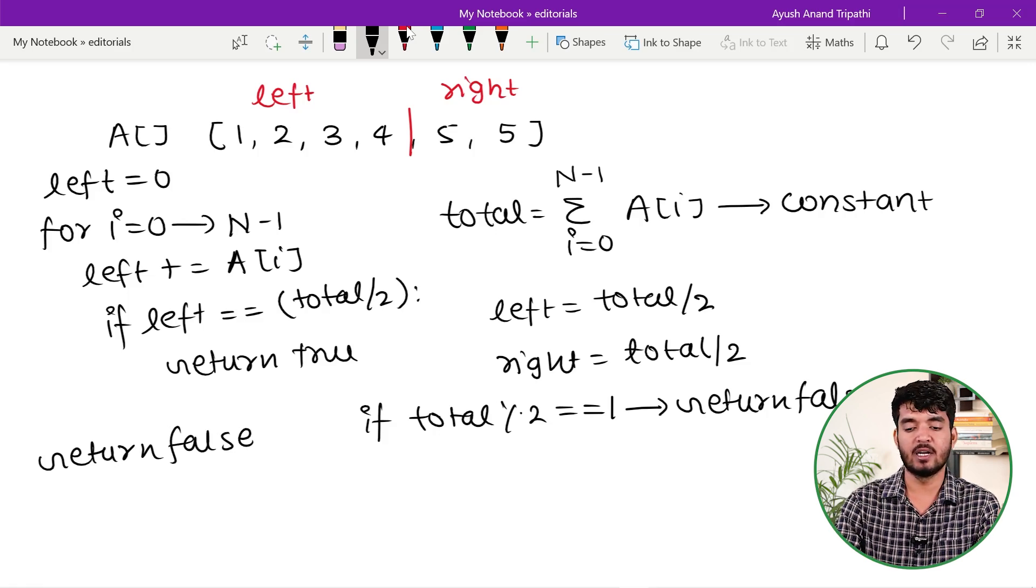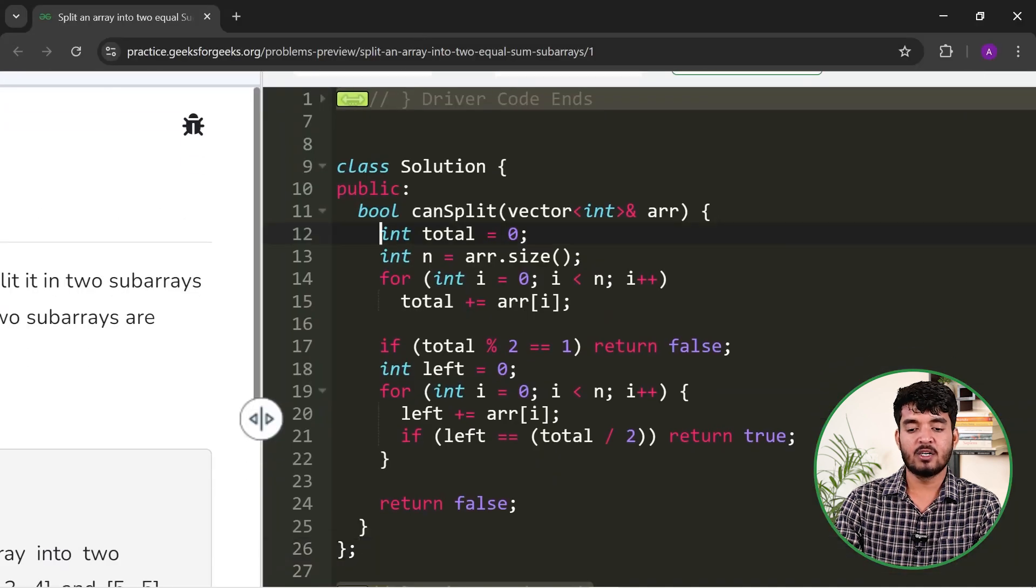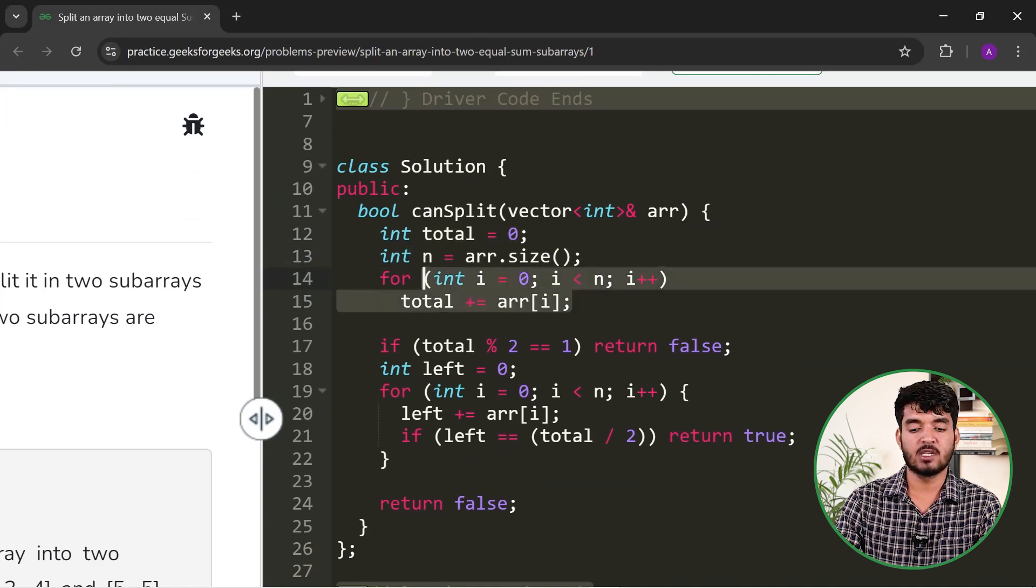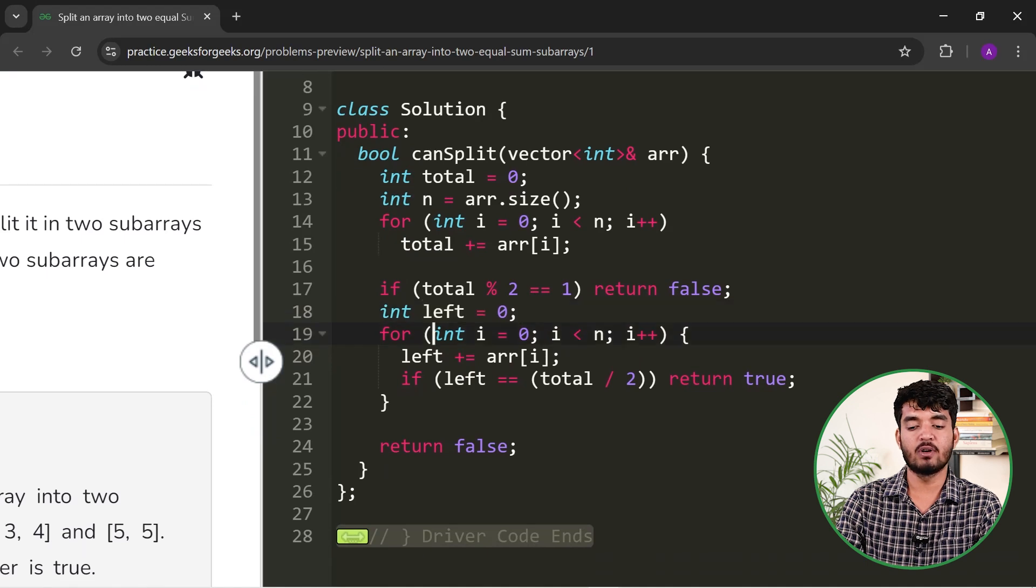This is the complete solution. Now let me show you the implementation. First, I am finding the total, which is the sum of all elements of the array. Here I get the size arr.size, then the sum of all elements. If it is odd, then return false.